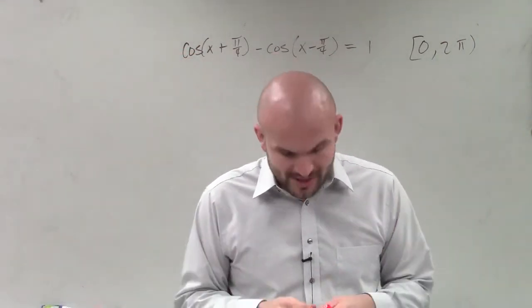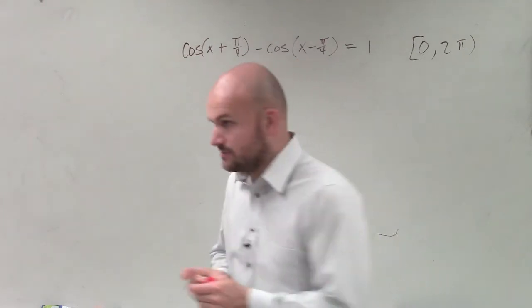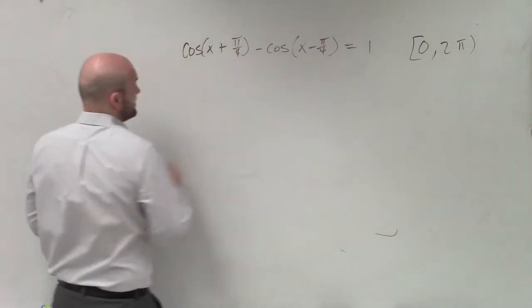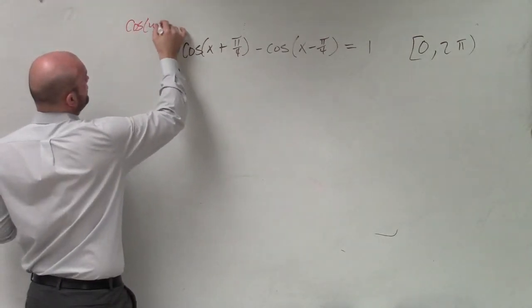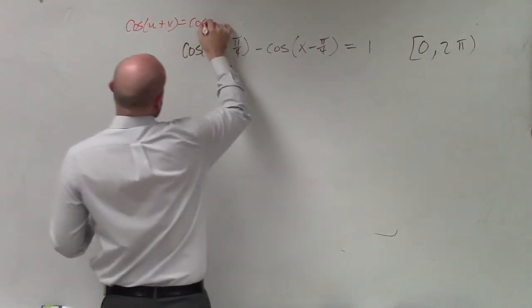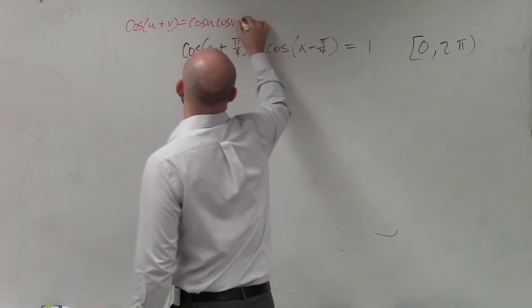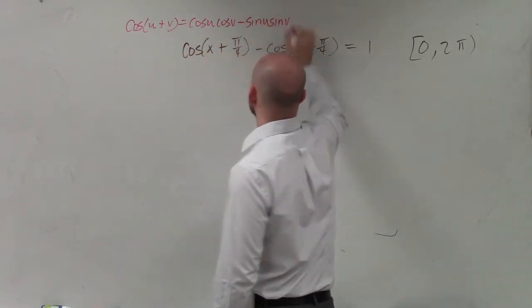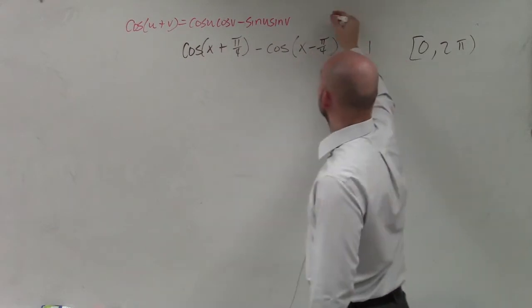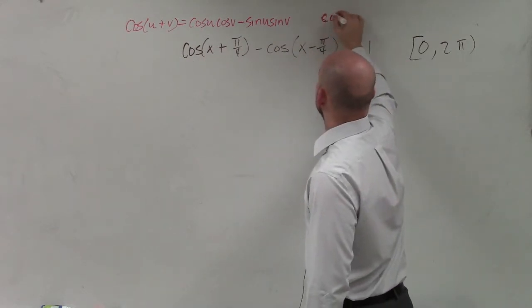So again, I'm just going to write down the formulas to make sure that we're using the correct ones. But we're going to have to apply this twice. So the sum of two angles, cosine of u plus v, the formula is cosine of u times cosine of v minus sine of u times sine of v.